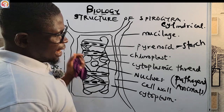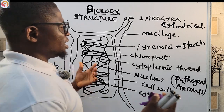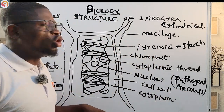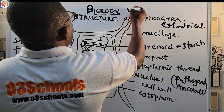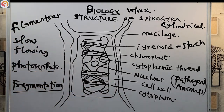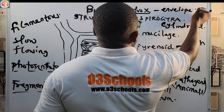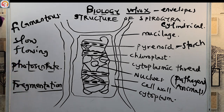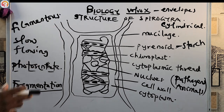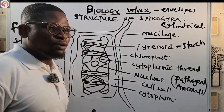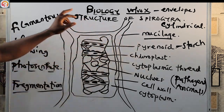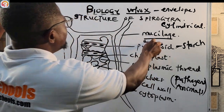Now let's look at the structure of the Volvox. The Volvox is being shown on your screen right now. The cells of the Volvox are separated from one another by mucilage — mucilage (M-U-C-I-L-A-G-E) — which also envelopes all the cells.